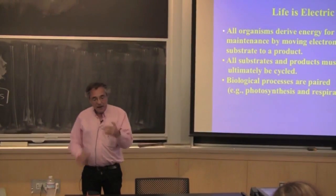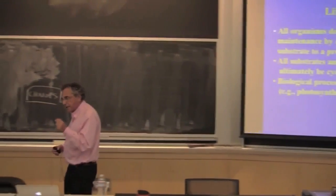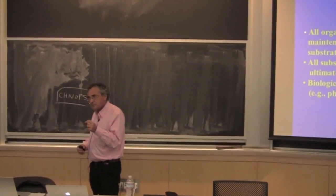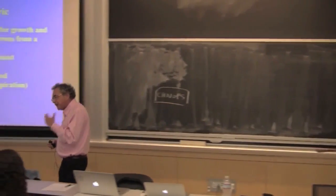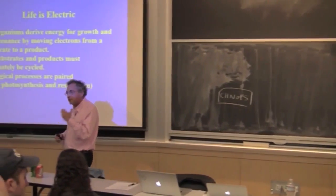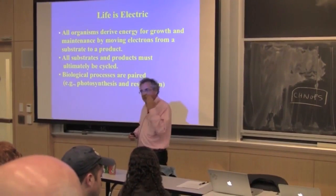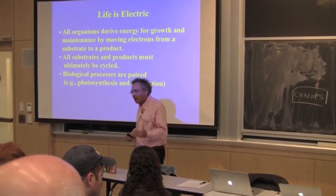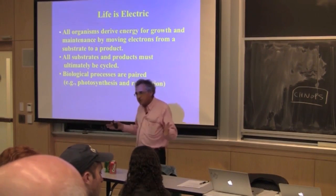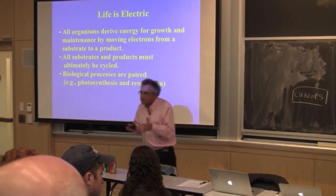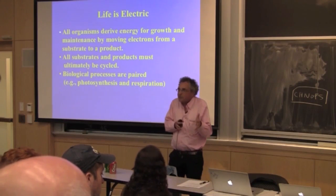Across the membrane of every single cell in your body, there is an electrical field. Some of those electrical fields can be discharged in appropriate ways — for neuron firing, for muscle firing. But most have to be recharged right away, otherwise the cell dies. When a cell dies, it loses its electrical field. The electrical field is a non-equilibrium condition set up as an emergent property of life.